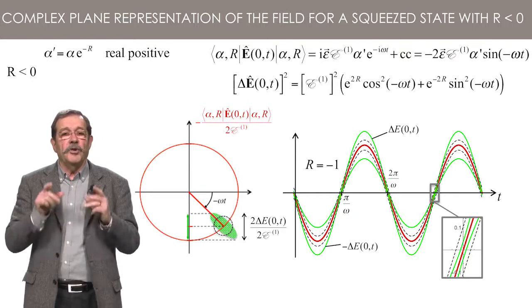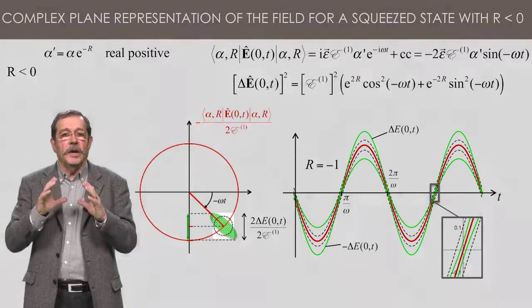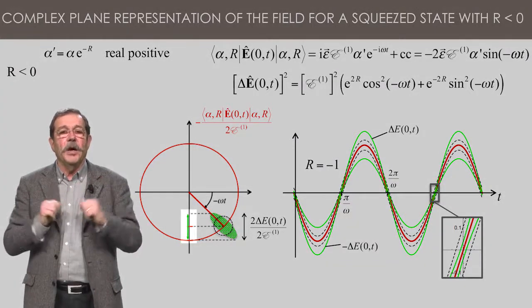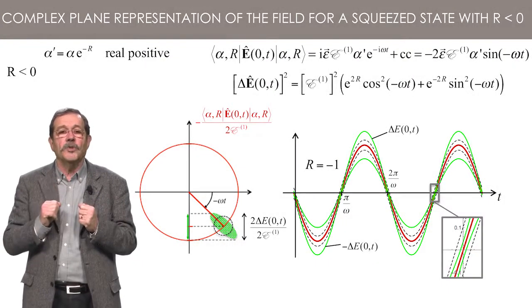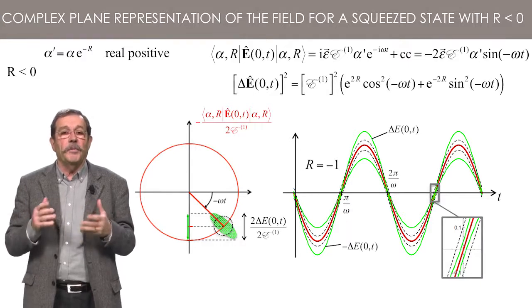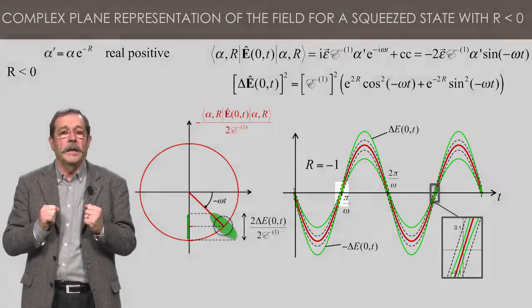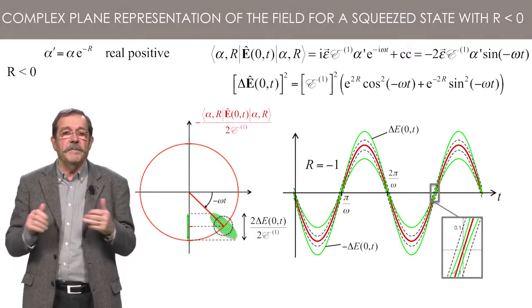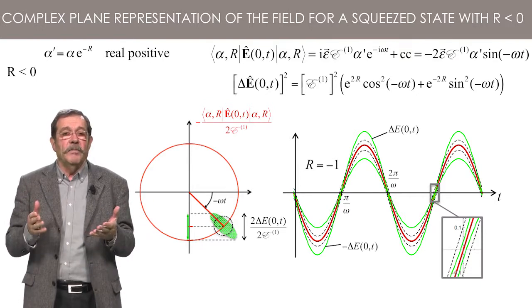Rather than the projection of a disk of diameter 2 E1, shown by the black dotted circle, the dispersion is a projection on the imaginary axis of an ellipse with a long axis larger than 2 E1 and the short axis smaller than 2 E1. This ellipse is rotating with a complex amplitude so that the projection is modulated between values larger and smaller than 2 E1. Since the short axis is tangent to the circle, it is clear that the dispersion is minimum for 0, pi, 2 pi, etc., while it is maximum for pi over 2, 3 pi over 2, etc.